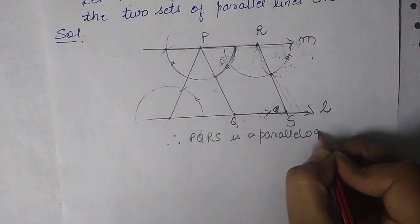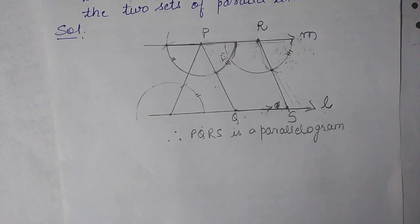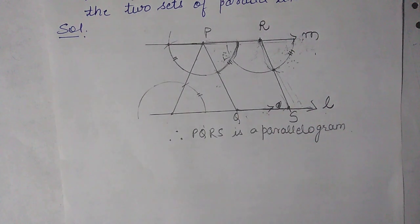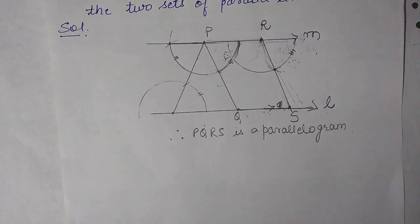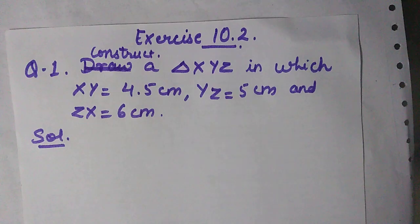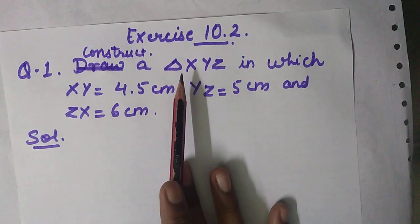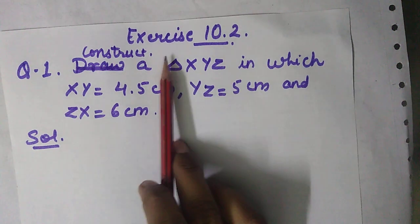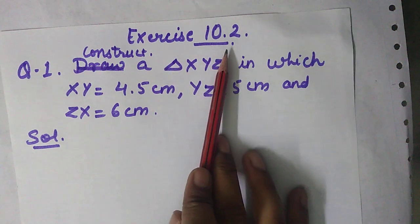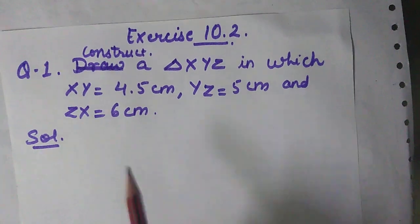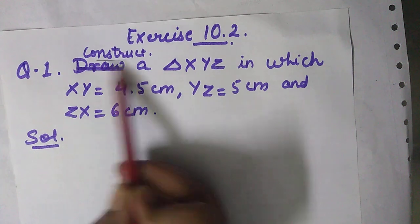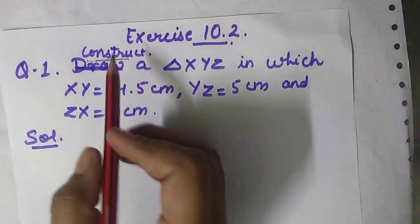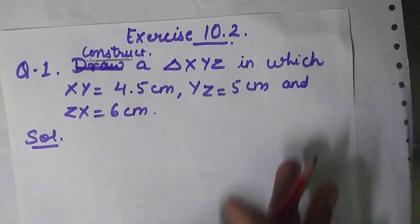So this is your exercise 10.1. Now we come to the next topic: how to construct a triangle when the lengths of its three sides are known. I will explain this with questions from exercise 10.2. The word 'construct' is used, so you have to write the steps of construction.